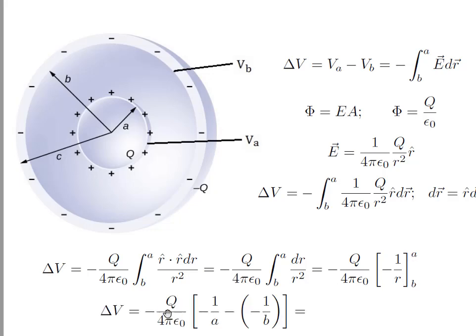We get the potential difference. So minus Q divided by 4 pi epsilon 0, minus 1 over a minus minus 1 over b. After simplification we get the potential difference...